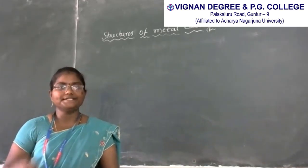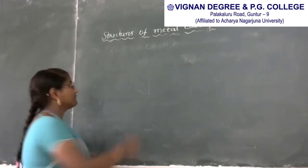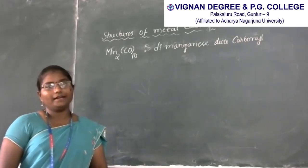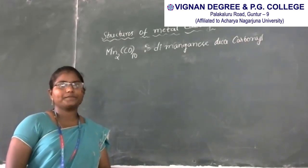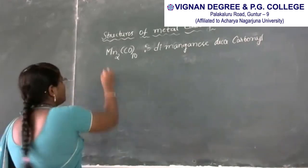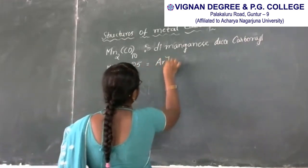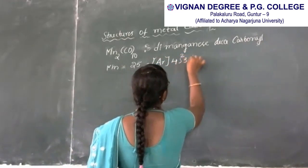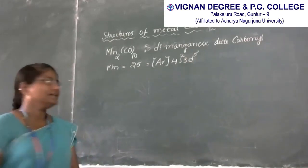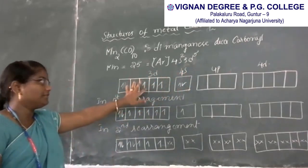The next structure for polynuclear metal carbonyls is dimanganese decacarbonyl, Mn2(CO)10. The atomic number of manganese is 25, with ground state electronic configuration [Ar] 4S2 3D5. The filling of electrons in ground state shows 2 electrons in 4S and 5 electrons in 3D.